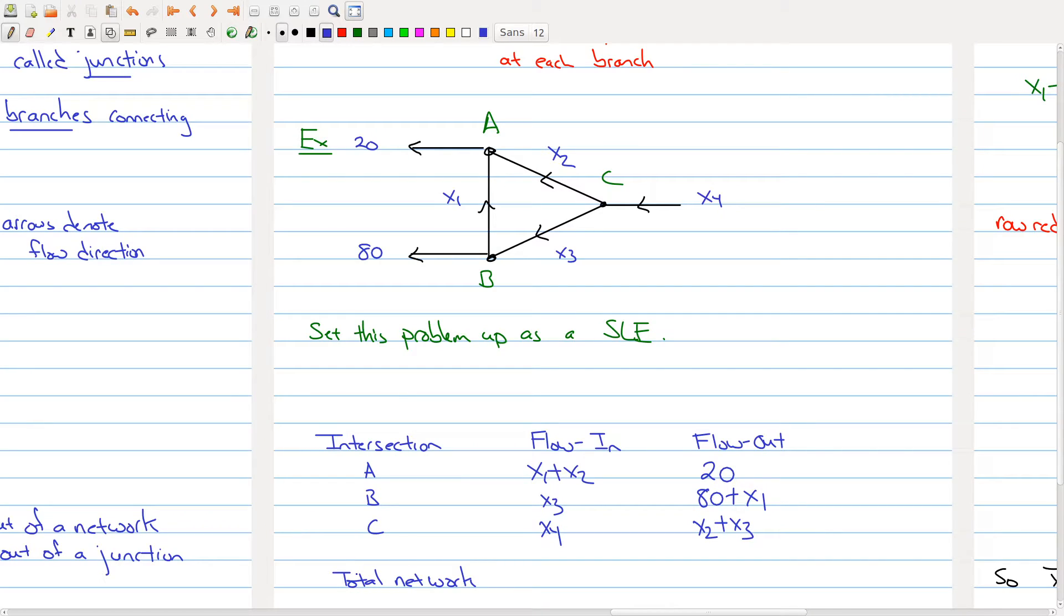For the total network, the only thing coming into the network is x4, and the only thing coming out of the network is 20 plus 80, which is equal to 100. So we have a bunch of equations that can be derived from the flow in equaling the flow out.